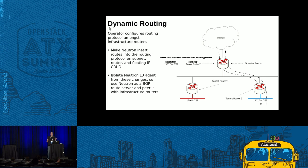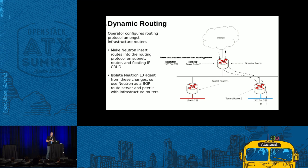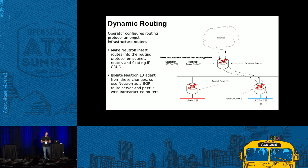The alternative is dynamic routing — configuring a routing protocol so your routers can advertise and negotiate next hops for subnets amongst themselves. This is the functionality we've been working to bring to Neutron over the last couple of cycles. Our philosophy was to isolate the Neutron L3 agent from these changes, and BGP seemed like a natural fit — it allows us to separate the control plane from the data plane, the latter being the Neutron L3 agent and the namespaces the routers operate in.